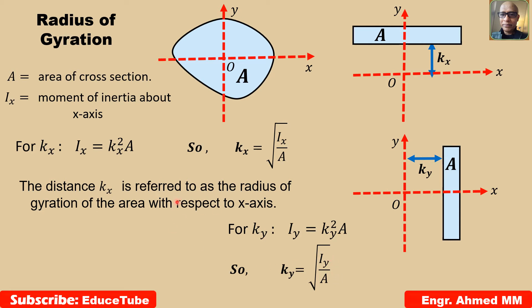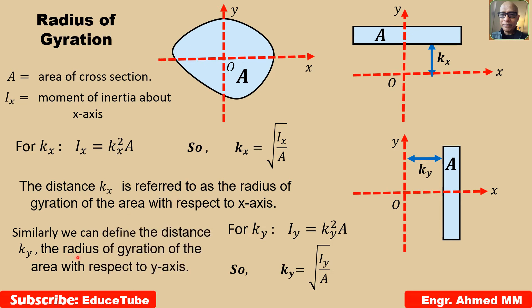So, what we can say about ky? The radius of gyration of the area with respect to y-axis. So, we got two things: one is kx, another is ky. Let's move to the next slide to see how to create a formula for rectangular sections radius of gyrations.